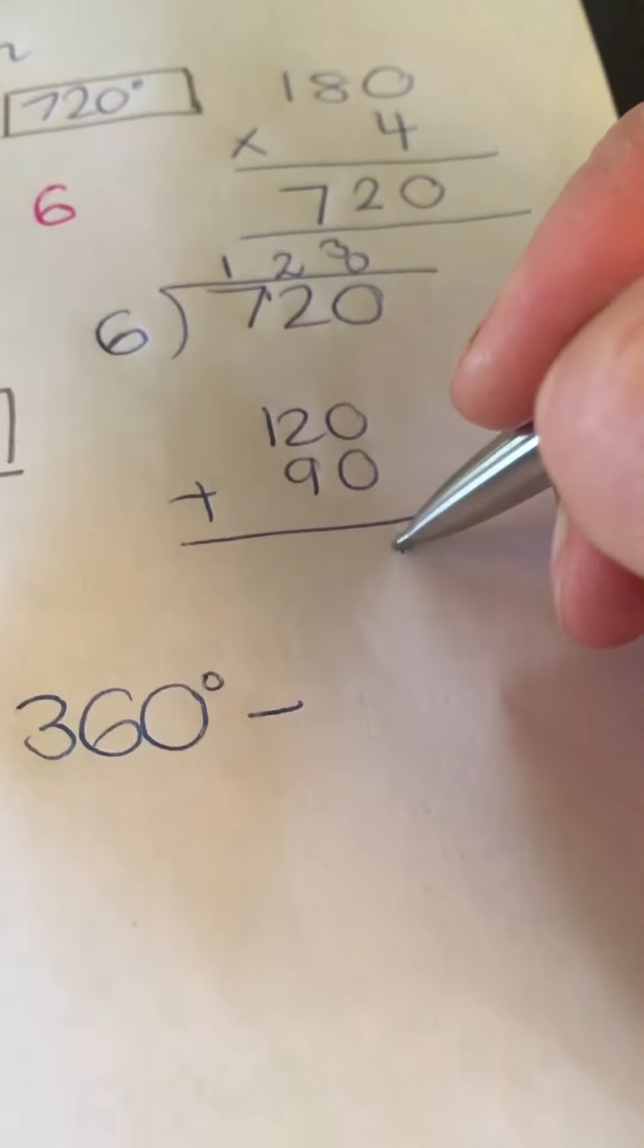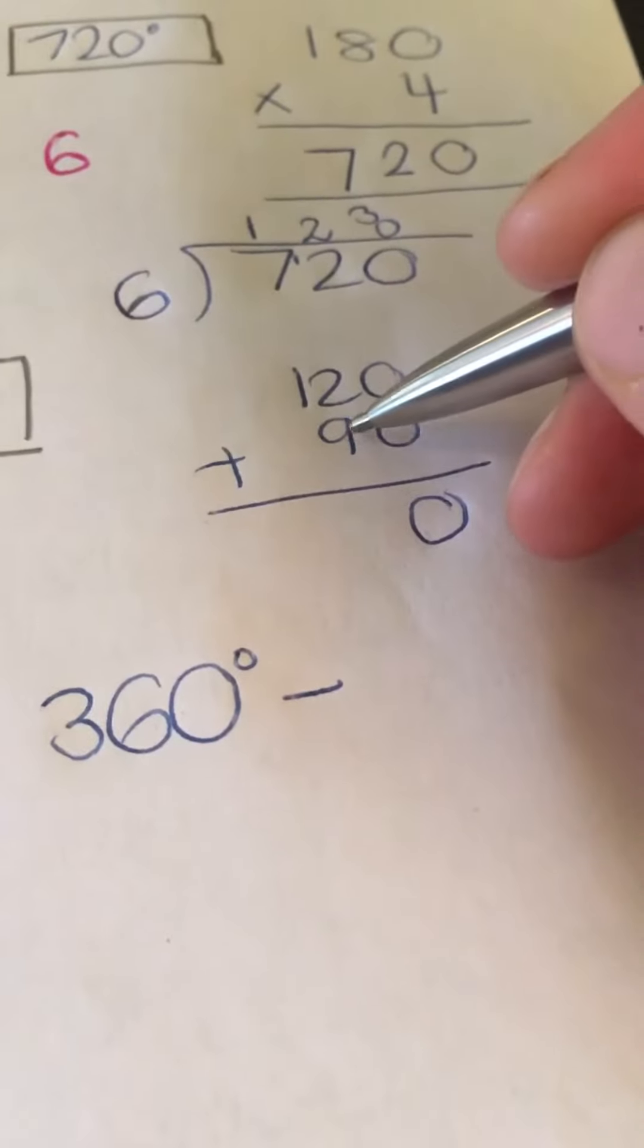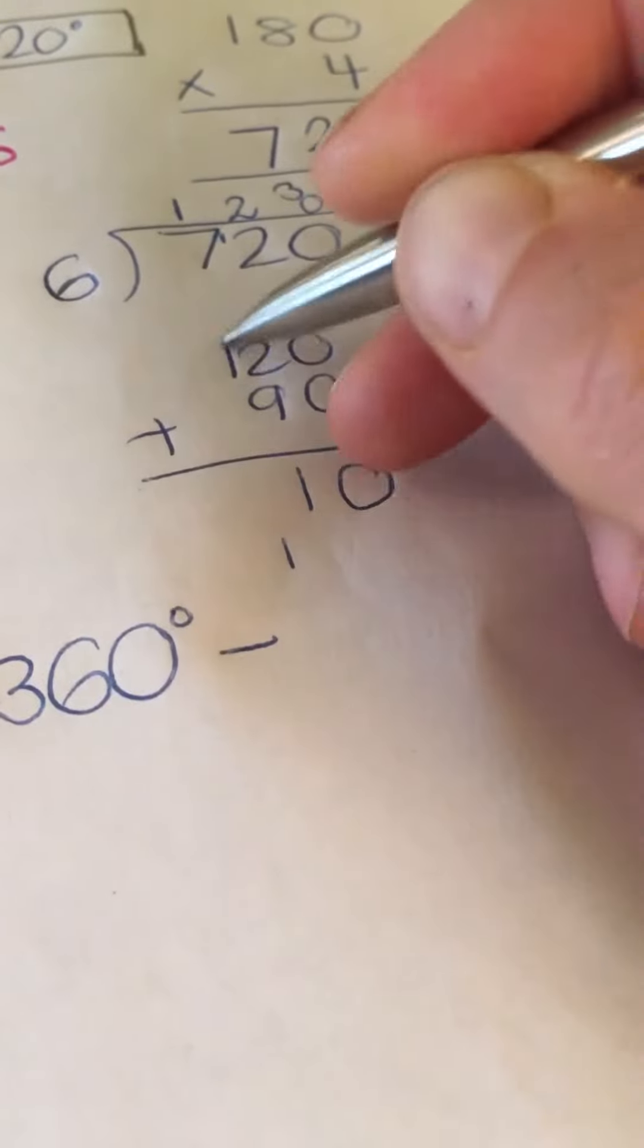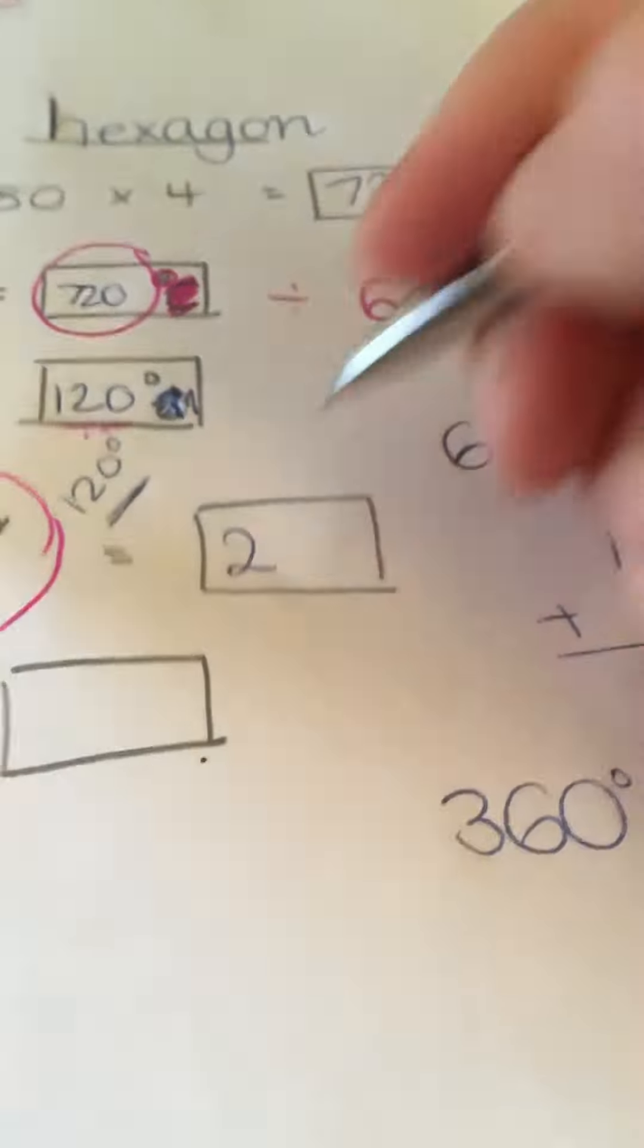Which is 120, add 90. I should probably do this in my head. 0 add 0 is 0. 9 add 2 is 11. 1 add 1 is 2. So, this is 210.